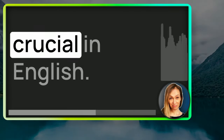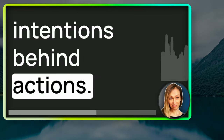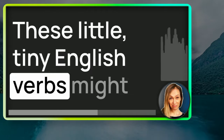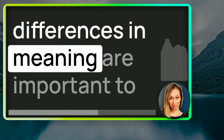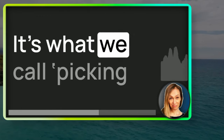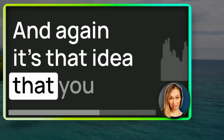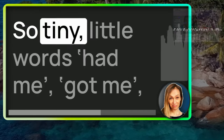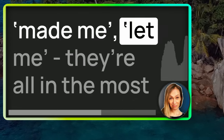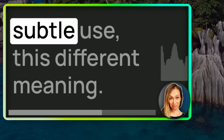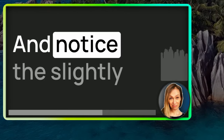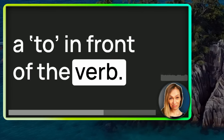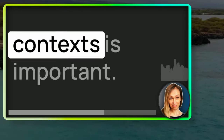These small verbs are crucial in English. They help you understand nuances and intentions behind actions. It's not just about the words, but about the stories they tell. These little tiny English verbs may not sound that different, but the differences in meaning are important to understanding what's going on — it's what we call picking up the nuances. You need to read the room if your level of English is going to be advanced. Had me, got me, made me, let me — they're all in the most common 500 words, but it's this subtle use, this different meaning. Notice that 'I'll get her to' is the only one that puts 'to' in front of the verb.